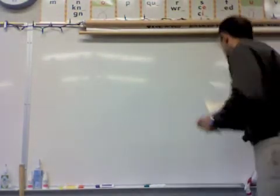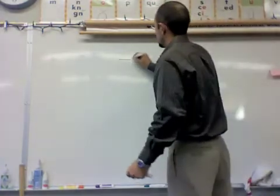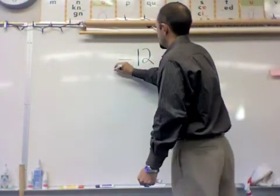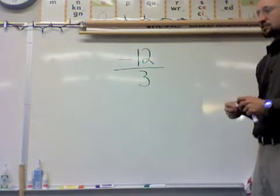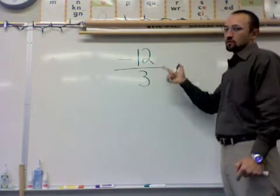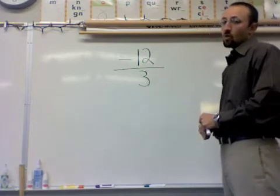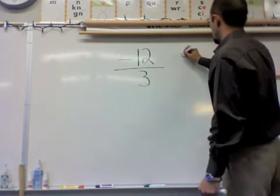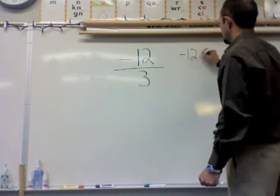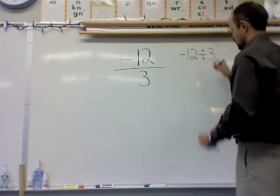And although this next one is a fraction, you still do a division problem. So negative 12 over 3 is the same as saying negative 12 divided by 3. So if I want to, I can rewrite this and I will say negative 12 divided by 3.